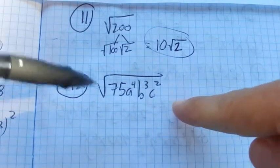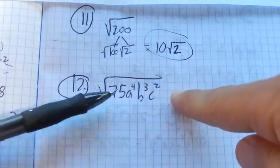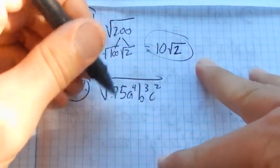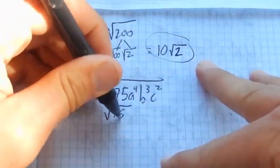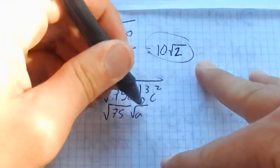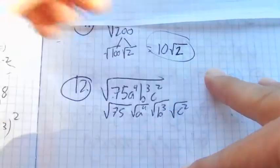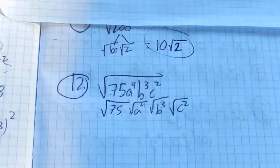We're going to do the same thing with 12. We have a bunch of different pieces here: 75, 8 to the 4th, b cubed, c squared. They're all square rooted. So I'm going to think of this as square root of 75, square root of 8 to the 4th, square root of b cubed, square root of c squared. Just like square root of each of those pieces.